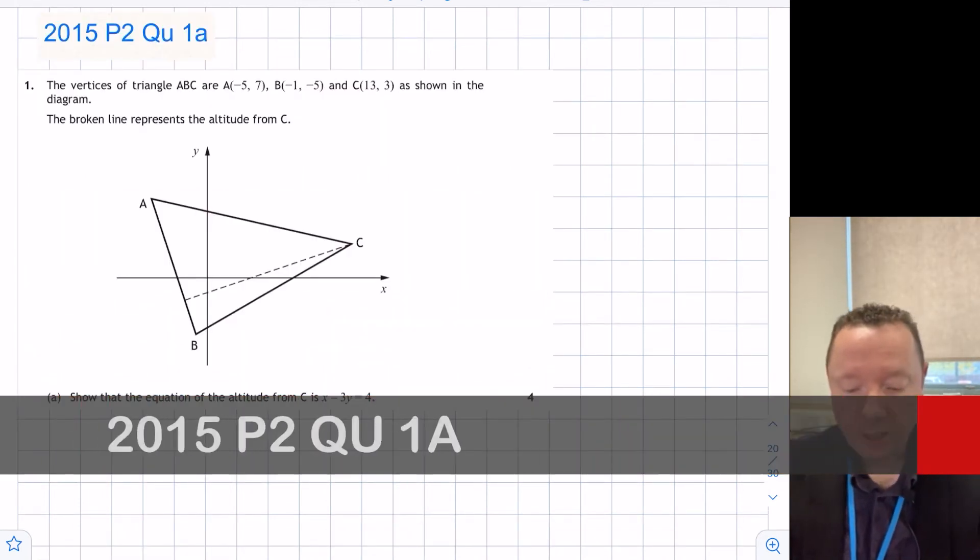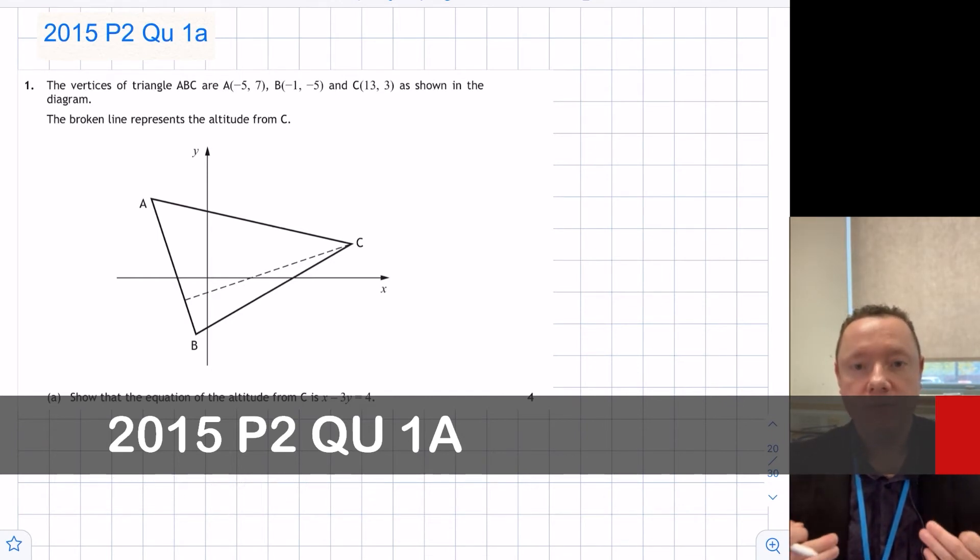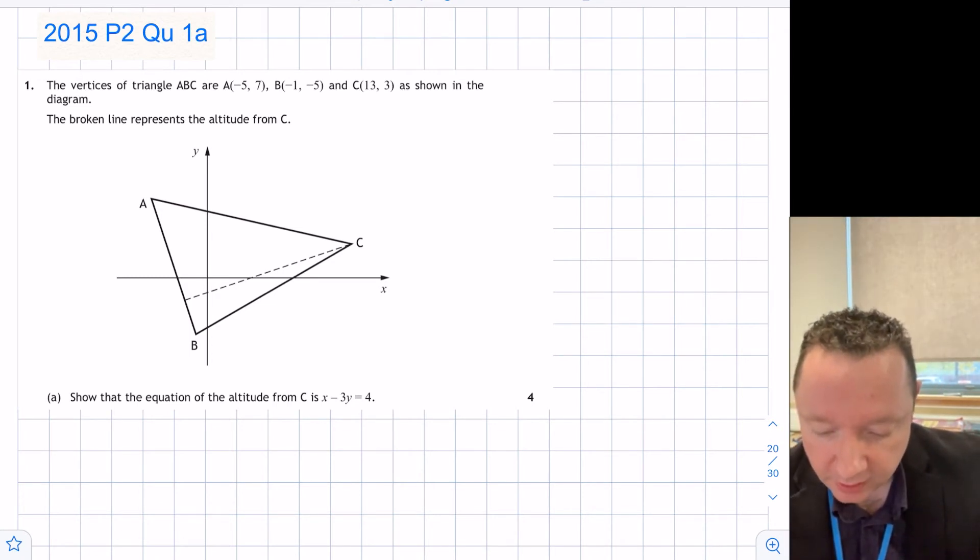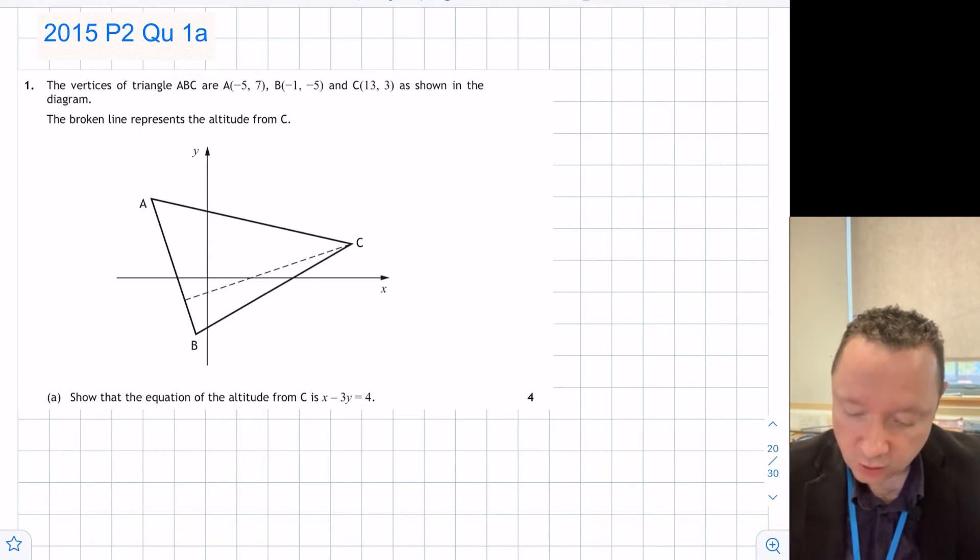Okay, a little past paper question, 2015 paper 2, just question 1A. You'll notice that most of these questions have three parts. You'll find the equation on various things. Once we get to the end of this course, we'll bring it all together, and we'll show all three parts together. But for now, we'll just do part A. The vertices of the triangle ABC are (-5, 7), (-1, -5), and (13, 3), as shown in the diagram. The broken line represents the altitude from C. Show that the equation of the altitude from C is X - 3Y equals 4. So they're telling us what the equation's going to be, but we're just going to work it out and see if we get the same answer.